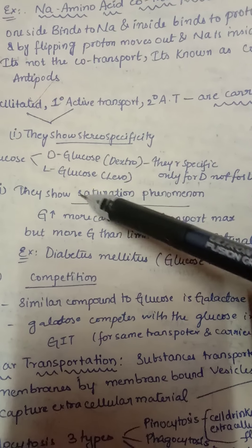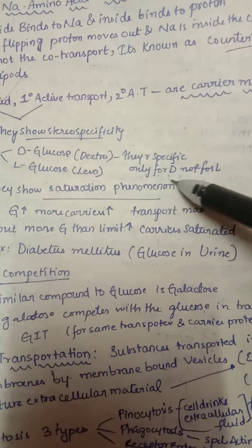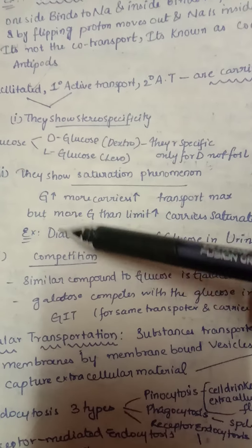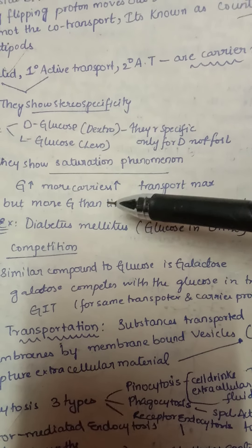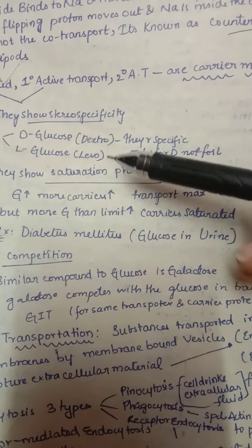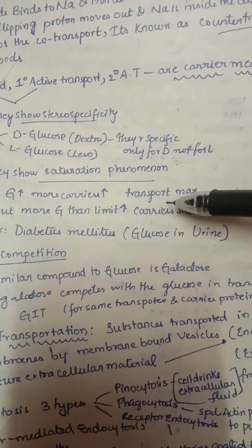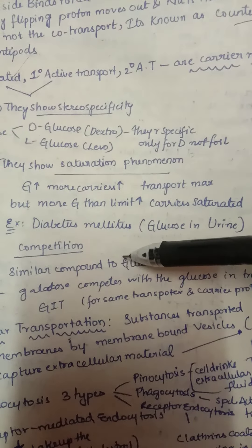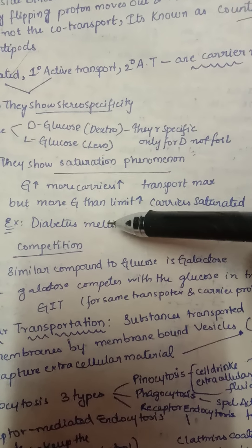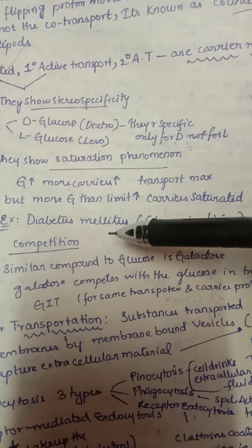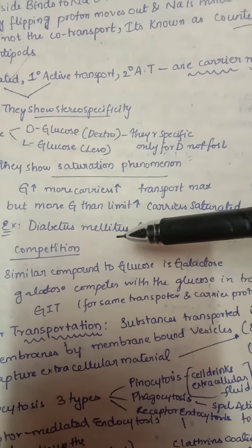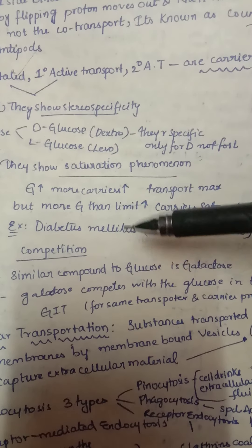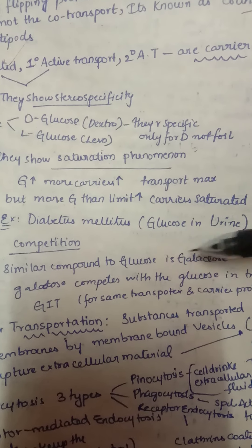These transporters also show saturation phenomena: when glucose is very high, more carriers are recruited and transport is maximal. But if glucose exceeds the carrier capacity — for example when a lot of food is eaten — the carriers are saturated and cannot take all the glucose inside, so glucose spills into the urine. This is seen in diabetes mellitus, where low insulin means fewer receptors for glucose uptake, blood glucose rises, and glucose appears in urine.